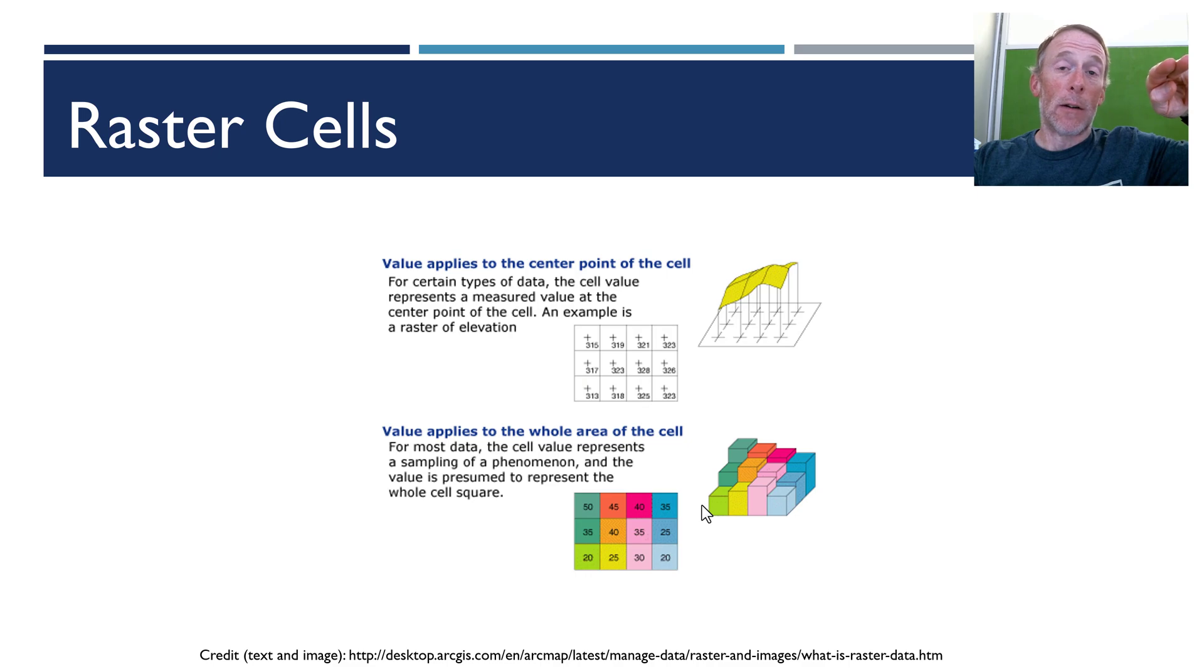Usually what we're going to have then is that raster value for that cell is going to represent an average of all the elevations across the area of the individual cell.